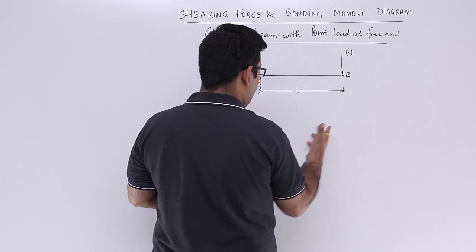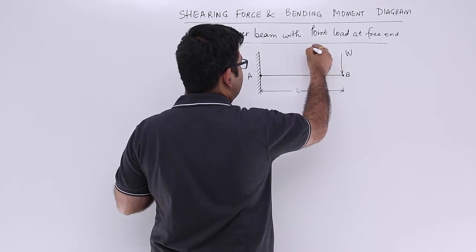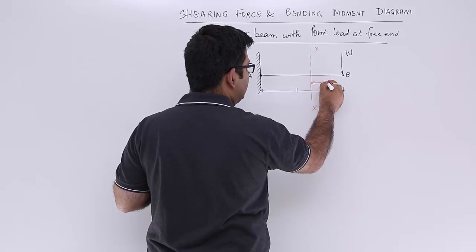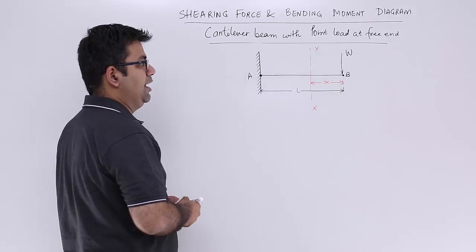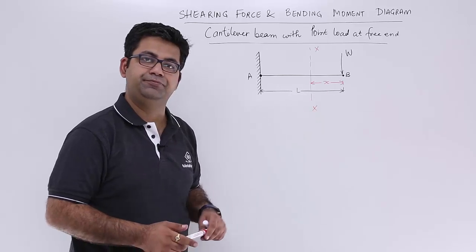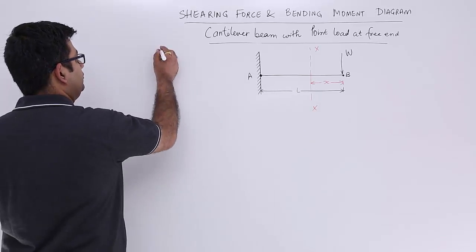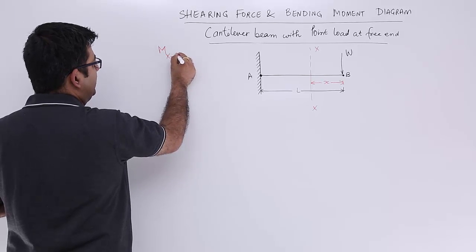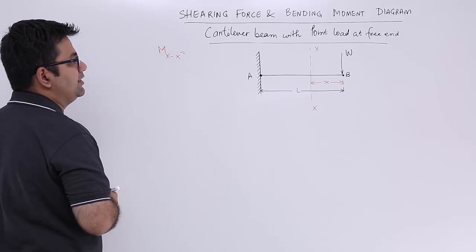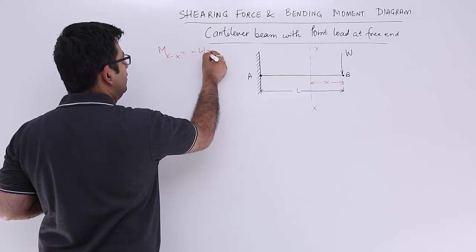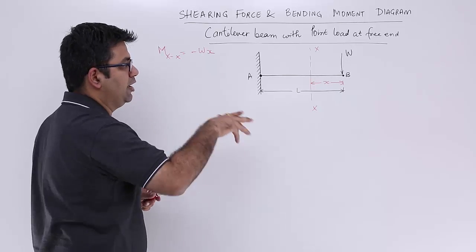Starting from the free end, let me consider any section xx and this is at a distance small x from the free end. So what would be the bending moment at the section xx? It would be minus w into x. Why negative? Because it is hogging.